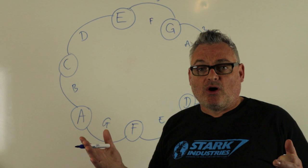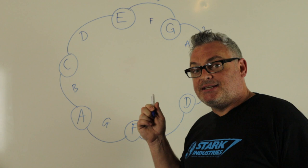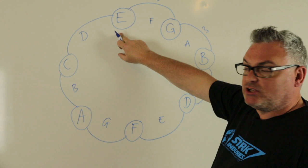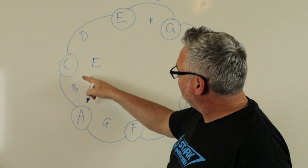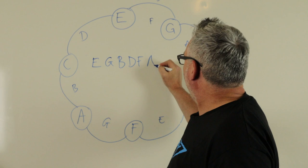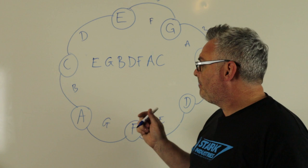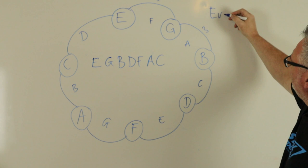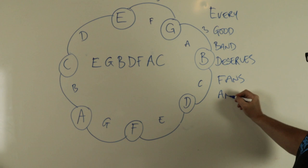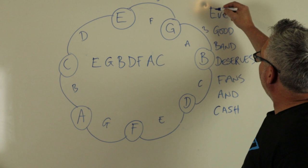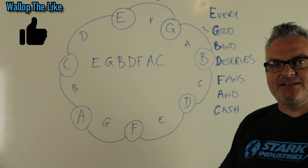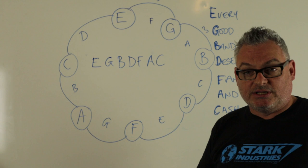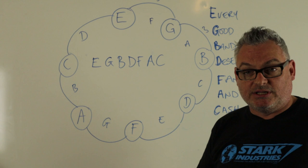The reason this is important is because all the chords from the key of C major are derived from this sequence. What we can do is take the musical notes in the circles and put them into a sequence. That sequence goes E, G, B, D, F, A, C. We need a handy way to remember this, and the mnemonic we're going to use is: Every Good Band Deserves Fans And Cash. We highlight each of the first letters: E, G, B, D, F, A, C. If we remember that mnemonic, it tells us the sequence of the cycle of thirds.